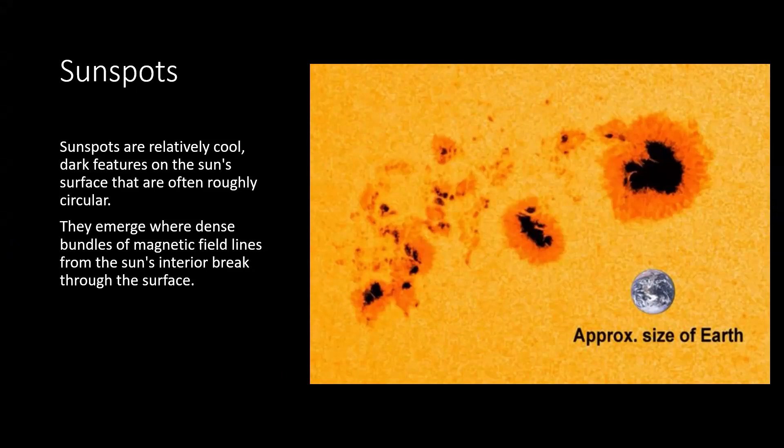Sunspots are relatively cool, dark features on the sun's surface that are often roughly circular. They emerge where dense bundles of magnetic field lines from the sun's interior break through the surface. If you look at the sunspot, this is the size of the Earth, and this is a sunspot. So at least two Earths will be able to, if not three, fit in this sunspot. These are huge structures, and they're dark because the color is different, and they're cooler than the rest of the sun.